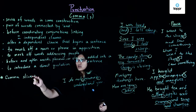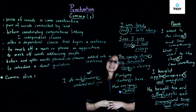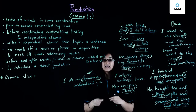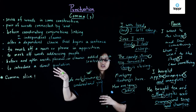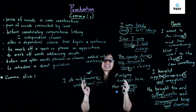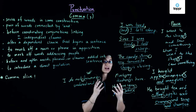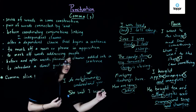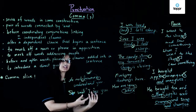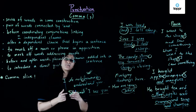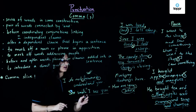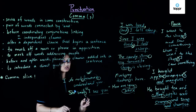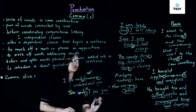We also use the comma to introduce a direct quotation. A direct quotation tells you the exact words spoken by someone. For example: 'She said, "I see you."' The part directly spoken is 'I see you.' Before you write a direct quotation, you need to place a comma before the opening quotation mark — so the comma comes before you introduce your direct speech.